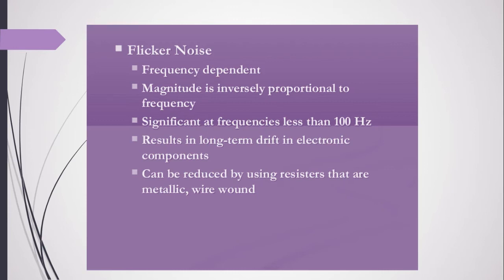The third type is flicker noise, which depends on frequency. Its magnitude is inversely proportional to frequency, meaning when frequency increases, the noise will be less. It is significant at frequencies less than 100 Hz and results in long-term drift in electronic components. Flicker noise can be reduced by using metallic or wire-wound resistors.